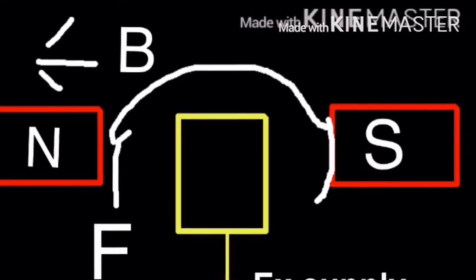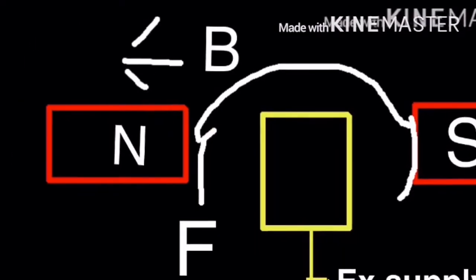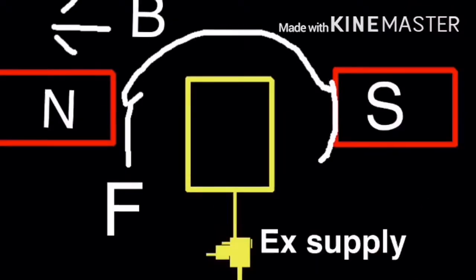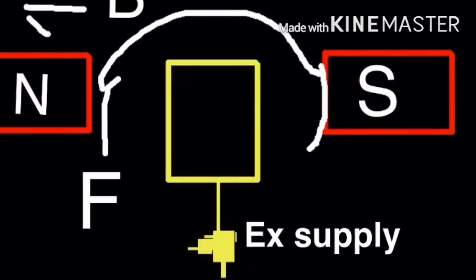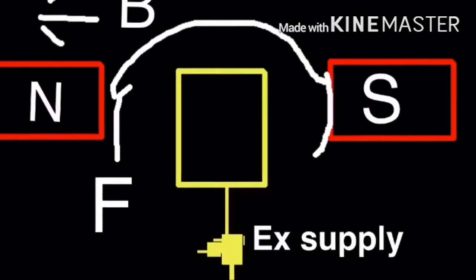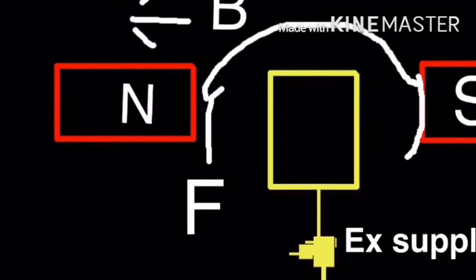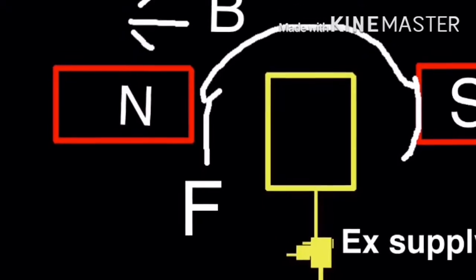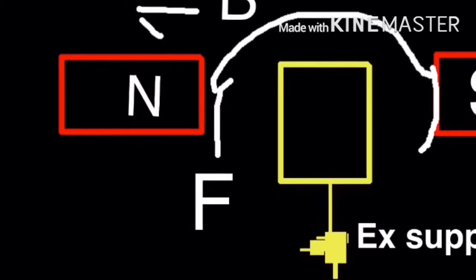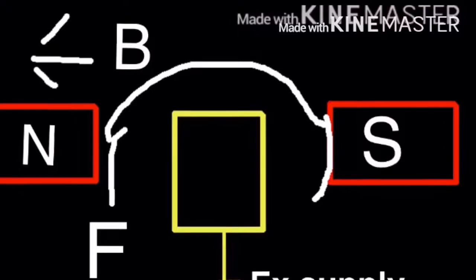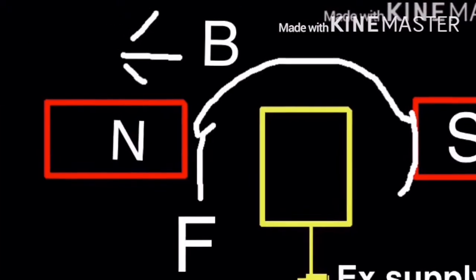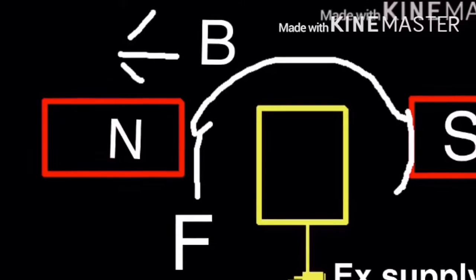In a DC motor, Fleming's left-hand rule is applied. The stator is the fixed part and the center portion is the rotor. In the rotor, a commutator is connected to the DC voltage. The current travels through the rotor, goes into the magnetic field, and the rotor's magnetic field and the external magnetic field interact with each other. The motion of force is perpendicular and in the opposite direction, so the motor rotates. That is how Fleming's left-hand rule applies in a DC motor.